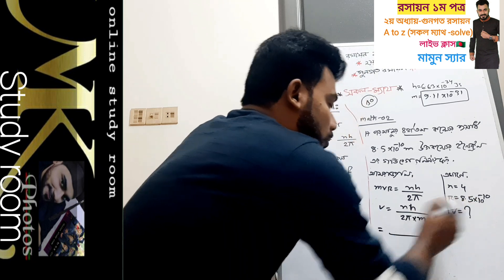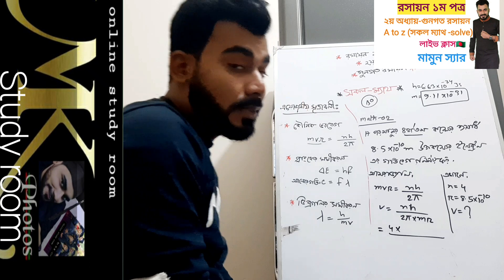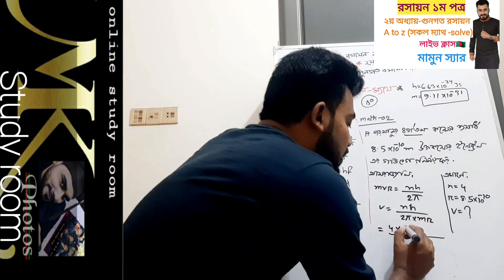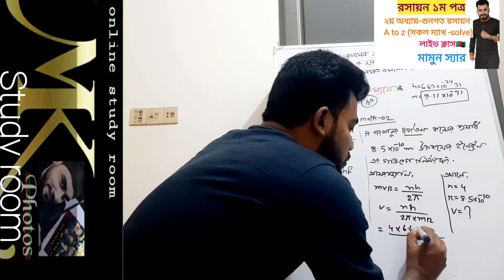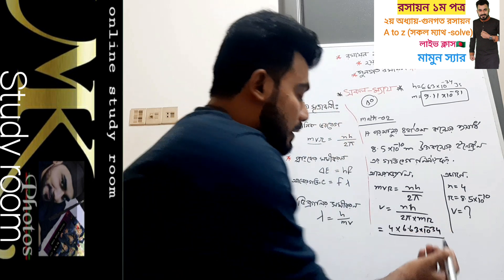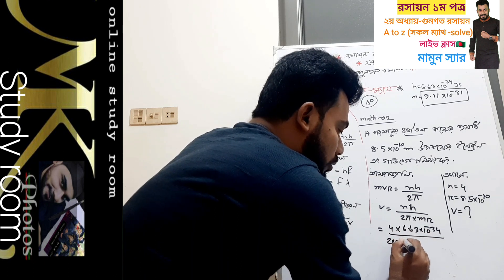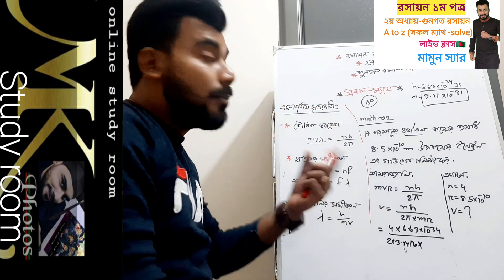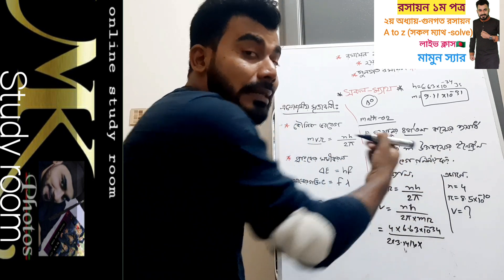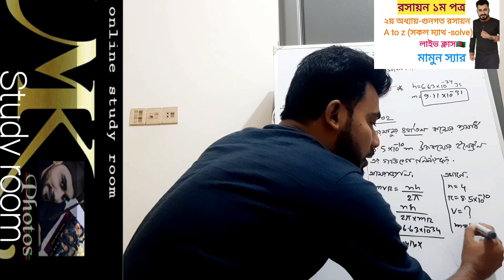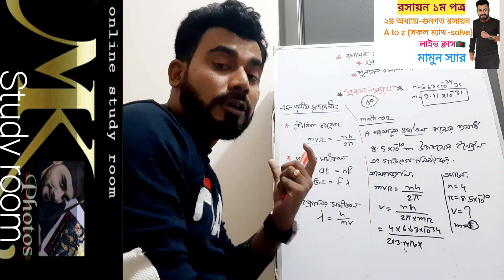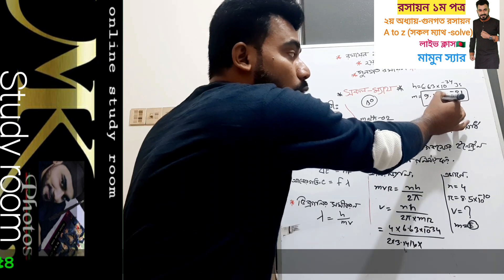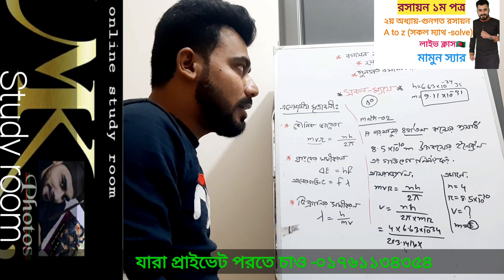n is 1. h is 6.63 × 10 to the power minus 34. 2π is 3.1416. We can write it here. m is 9.11 × 10 to the power minus 31.